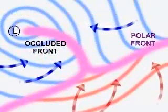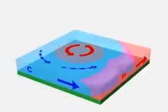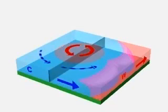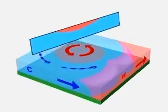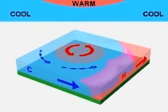The occluded front occurs when cold air cuts off the intrusion of warm air at the surface. In-spiraling warm air is pinched off and the polar front is re-established, but the pool of warm air remains aloft.